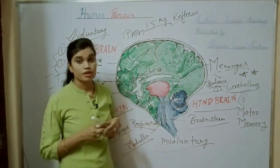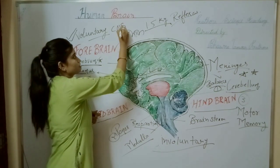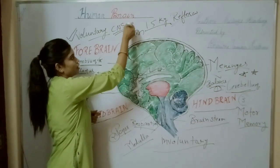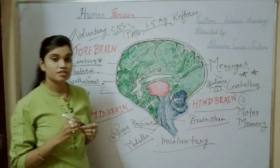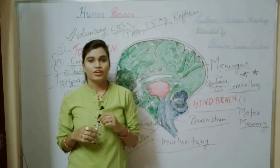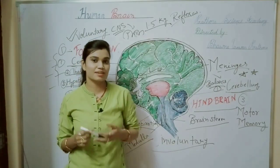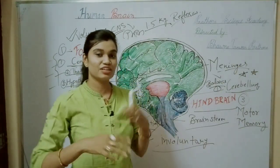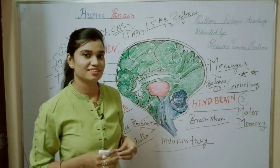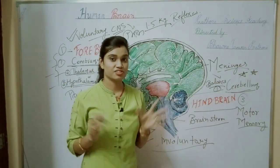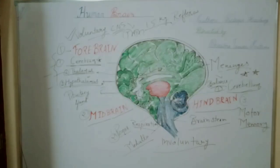The brain is also an important part of the CNS — central nervous system. Brain and spinal cord together make the central nervous system. So here this topic is over. Like and subscribe to my YouTube channel, and we will continue with more important topics of CBSE Class 10 Science. Stay safe, stay healthy.